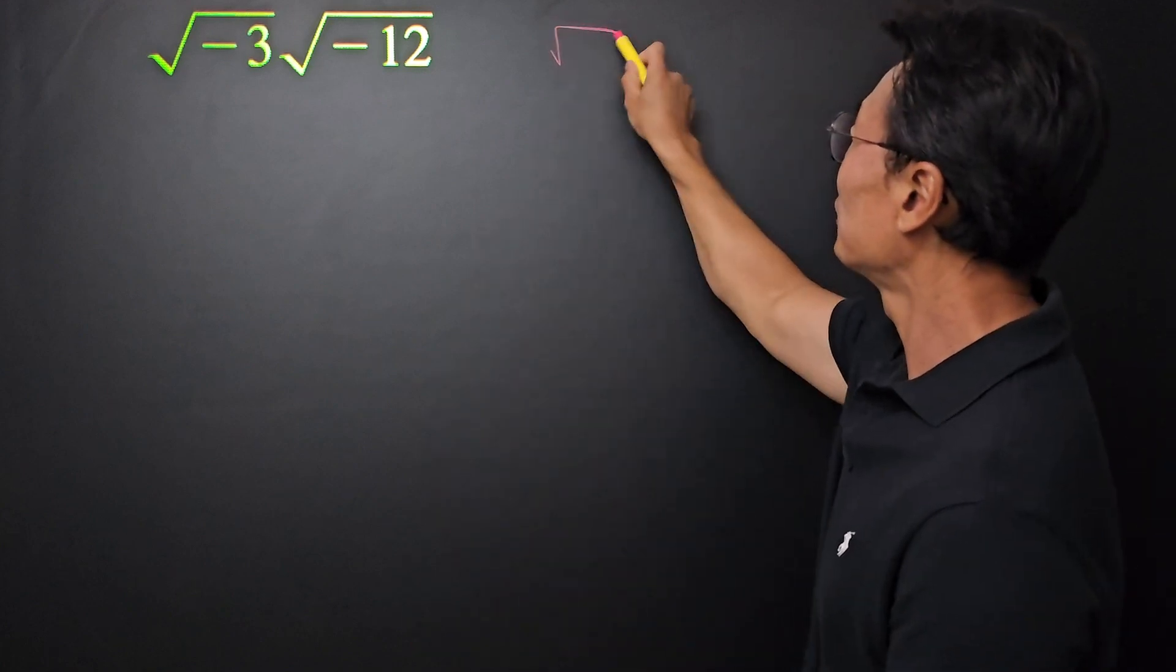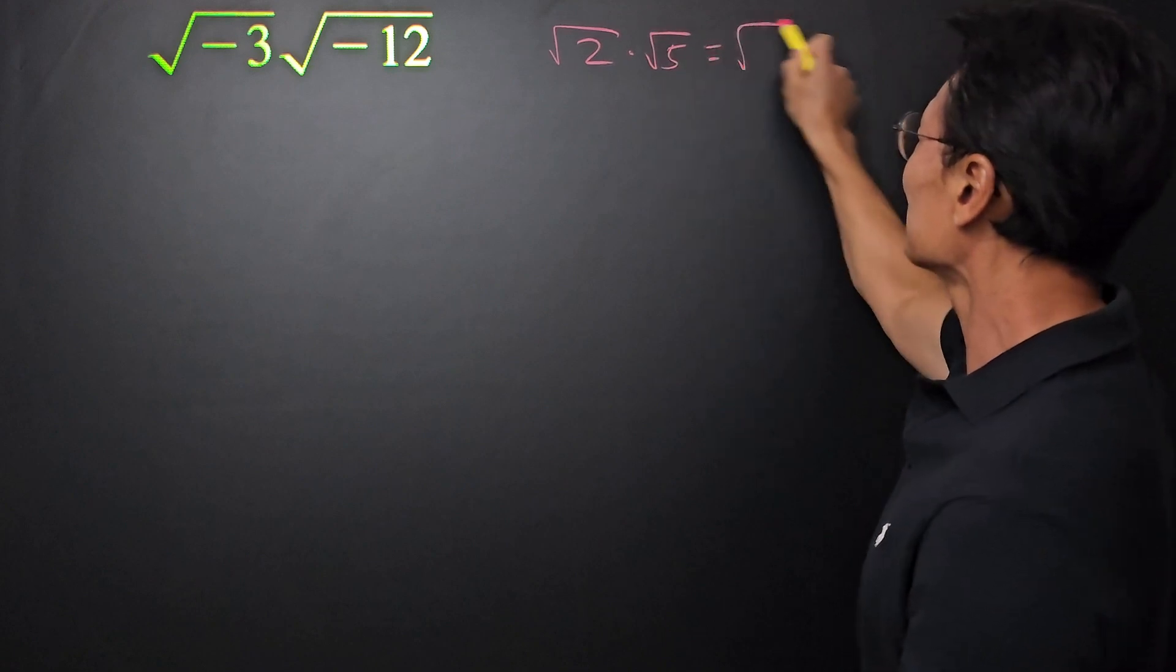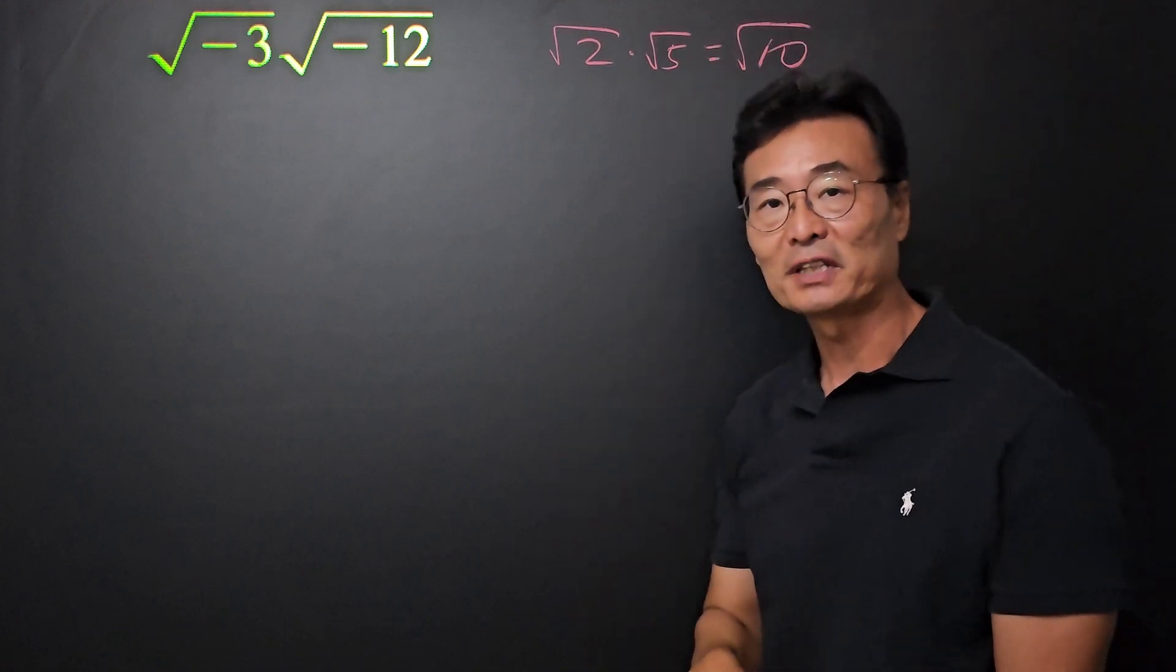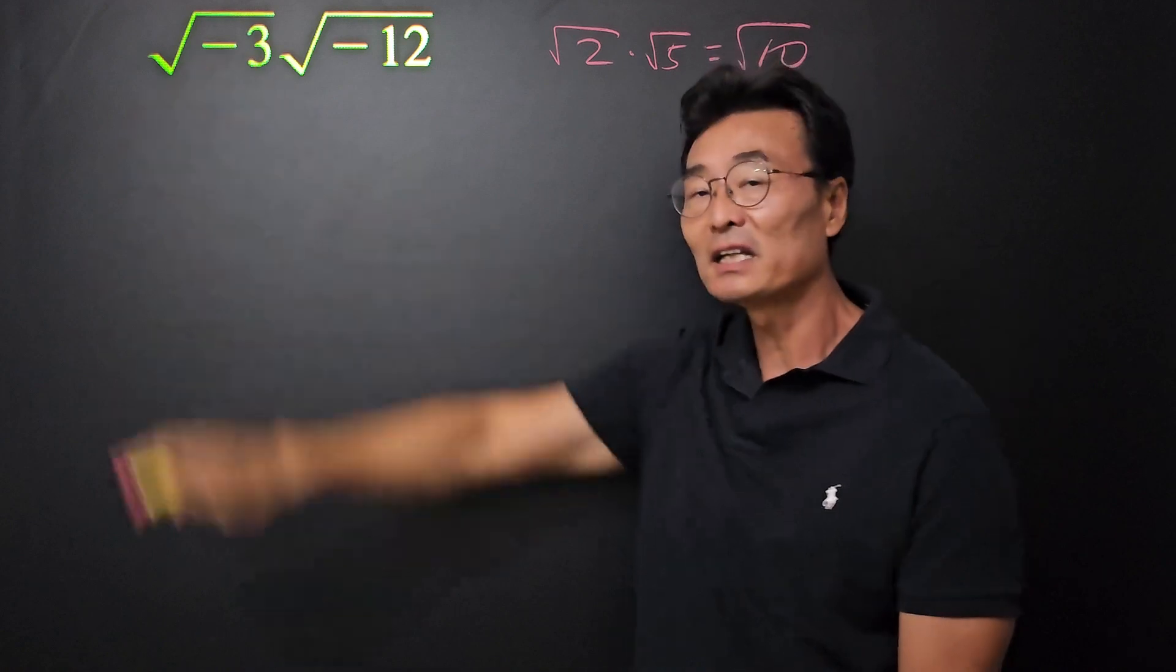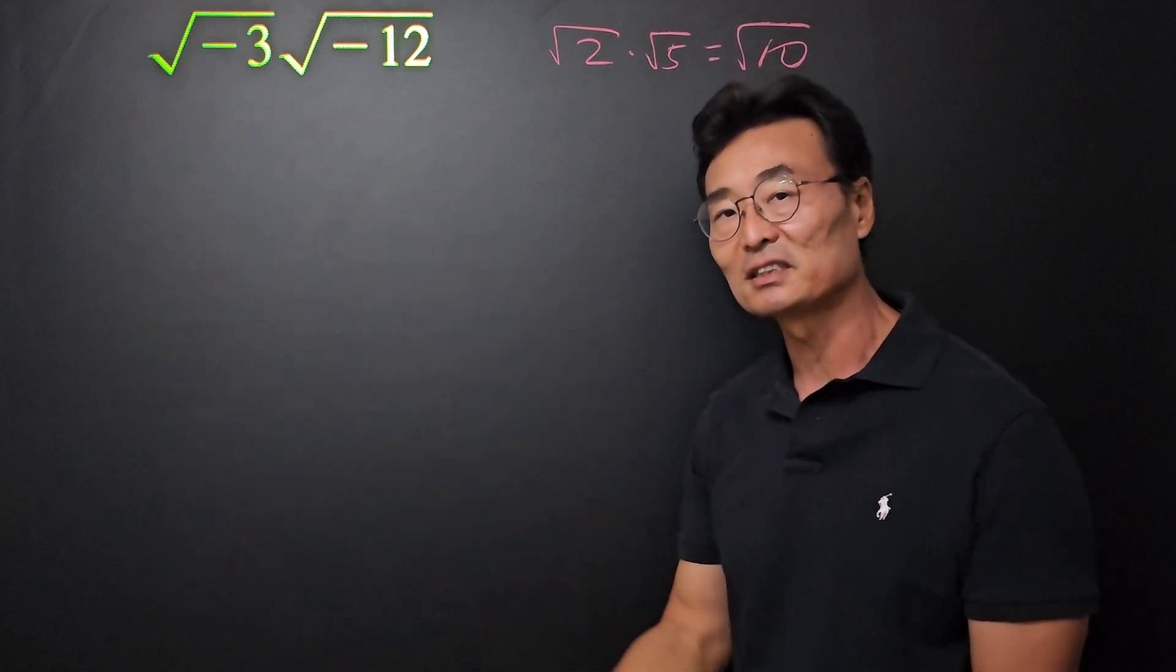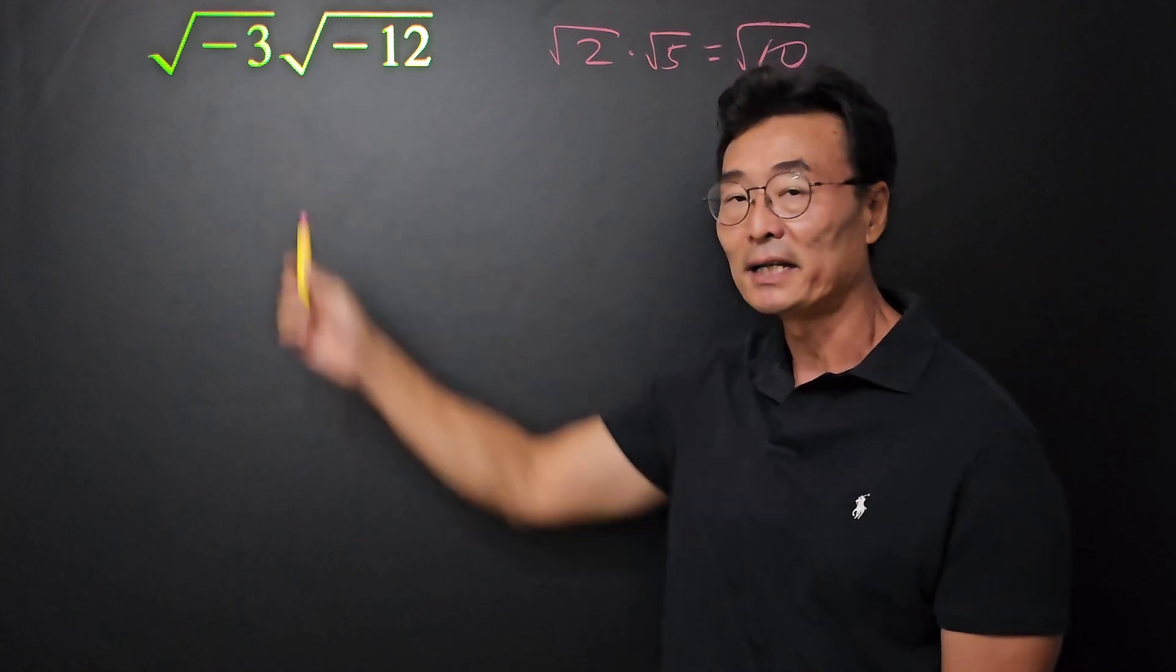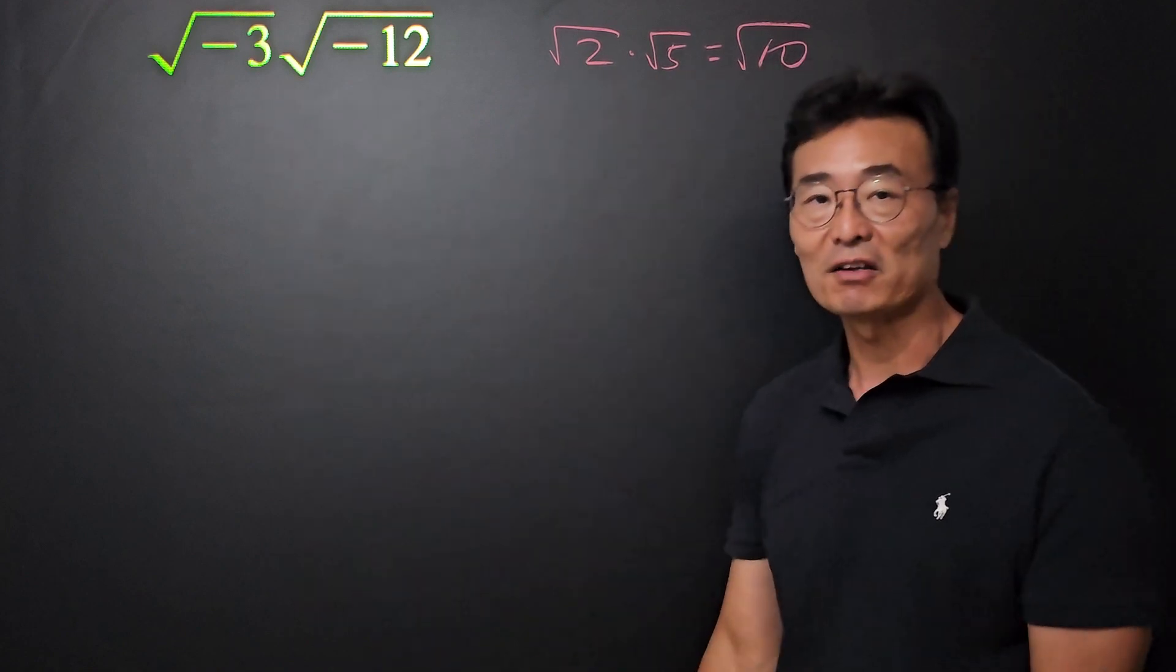For example, if we have square root of 2 times square root of 5, that is equal to square root of 10. However, when we have a negative number inside the square root, because it's an imaginary number, we cannot combine it like we do here when we have positive numbers.